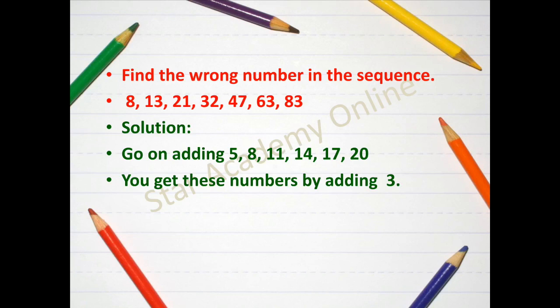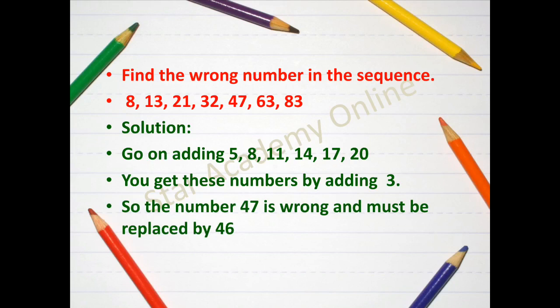Now we will add them to the given question that means 8 plus 5 is equal to 13. Then 13 plus 8 is equal to 21. Then 21 plus 11 is equal to 32 and 32 plus, here lies the main thing. 32 plus 14 is not equal to 47 whereas it is equal to 46. So here we can identify the wrong number which is 47.